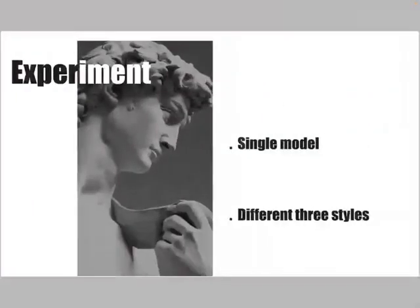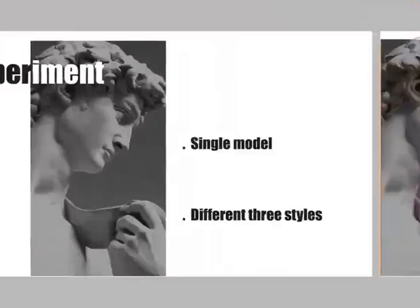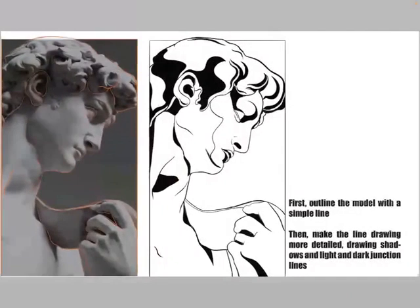Now I present my own experiment. I thought that if I could control these different style features, I could use the same model to draw illustrations in different styles and make the differences between these three styles more obvious. First I outlined the character in a simple line, then drew simple details such as the shadow of the character, hair, and the border between light and dark.